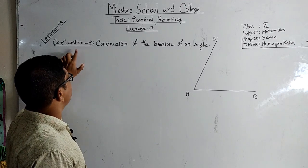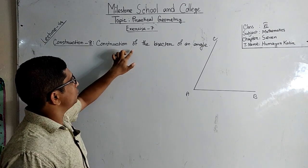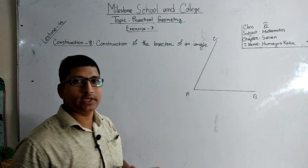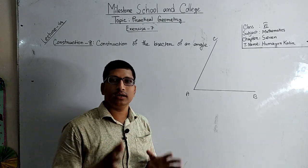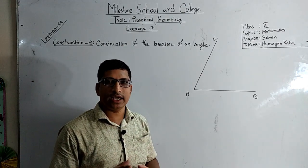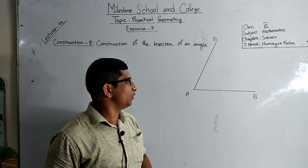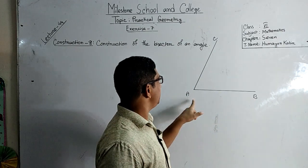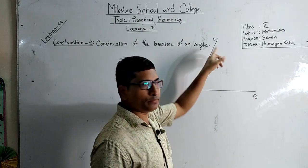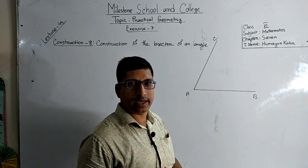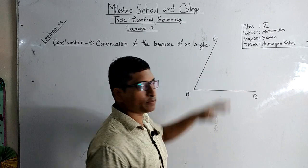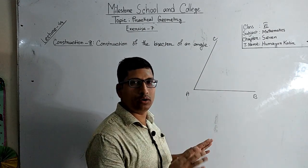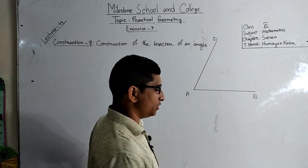Construction 8: Construction of the bisector of an angle. Suppose there is given an angle. We will draw this angle's bisector. They are given an angle BAC. This is the angle. Now we will draw the bisector of this angle. Here I will show how we will draw this bisector.